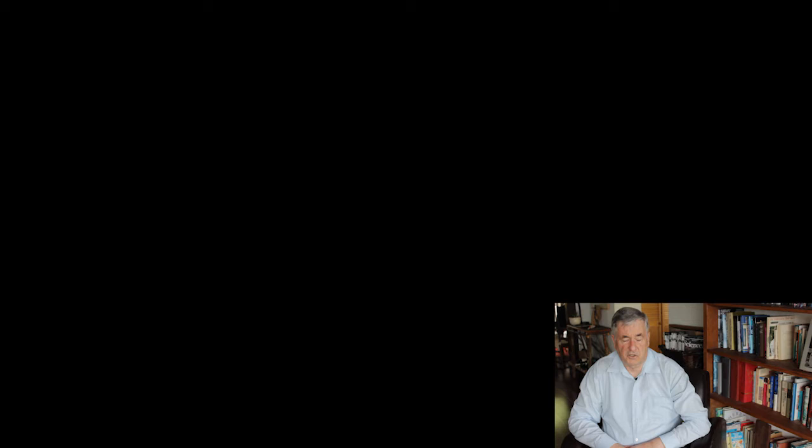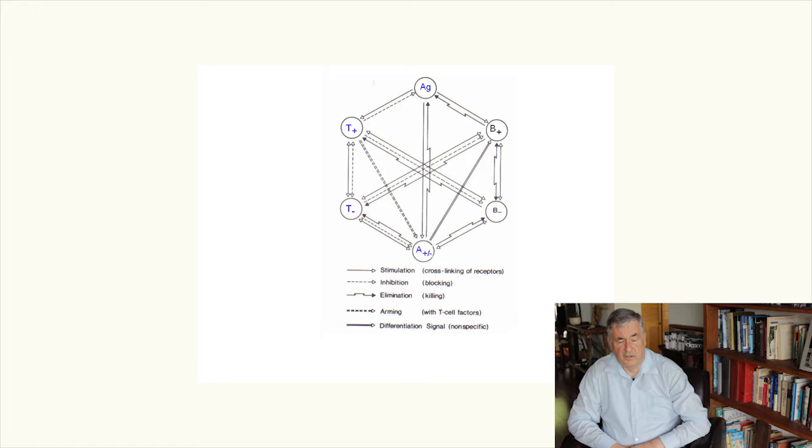This slide shows the interactions that are important for tolerance induction. The important populations here are the antigen, which stimulates T plus. T plus makes tabs that bind to the A population. Those tabs on the A population can then stimulate the T minus population, which also secretes tabs that bind to the A cell, so that the A cell is armed with a mixture of both T plus and T minus factors. There's a positive feedback loop here between the T plus and the T minus population, such that they both proliferate and they take the system to a new stable steady state with elevated levels of both T plus and T minus populations.